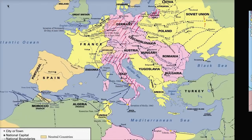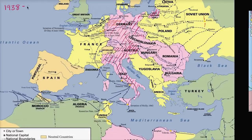In 1938 you have the Anschluss — the unification with Austria — and you also have the takeover of the Sudetenland in Czechoslovakia. This is the famous moment where the rest of what would be called the Allied Powers kind of said, okay, maybe Hitler's just going to do that. We don't want to start another war; we still all remember World War I. So they appease Hitler, and he's able to satisfy his aggression. Austria and the Sudetenland are taken over by Germany in 1938.